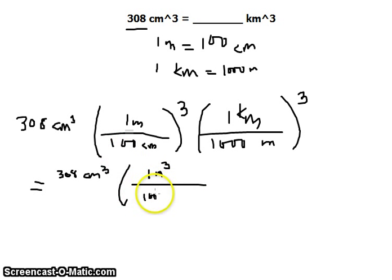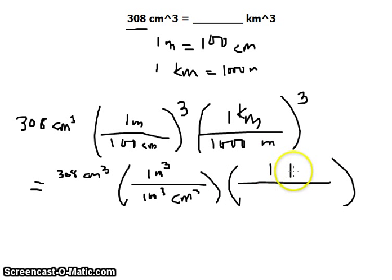Then we multiply it by the kilometers, which would be cubed, and the kilometers would also be cubed. And 1000 would also be cubed, and the meters would be cubed. So now we can cancel these units.